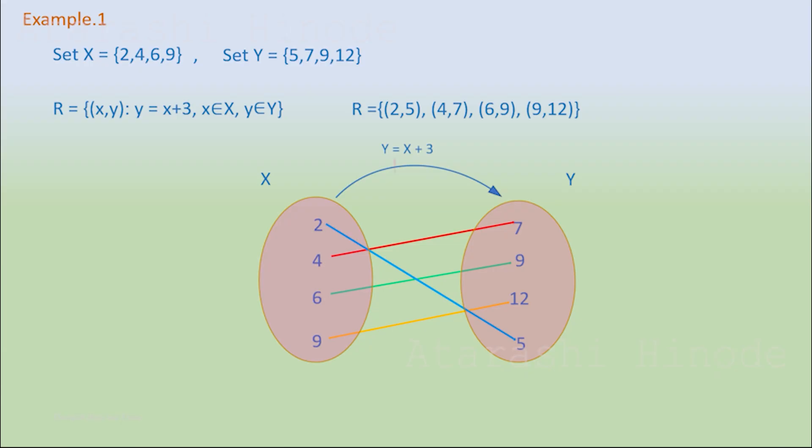Here, you can see the domain is the set {2, 4, 6, 9} and the range is the set {5, 7, 9, 12}. If you take a look at this, you will notice that the domain set is nothing but the set X itself. And no two distinct ordered pairs in this relation have the same first element. So, this relation is a function.